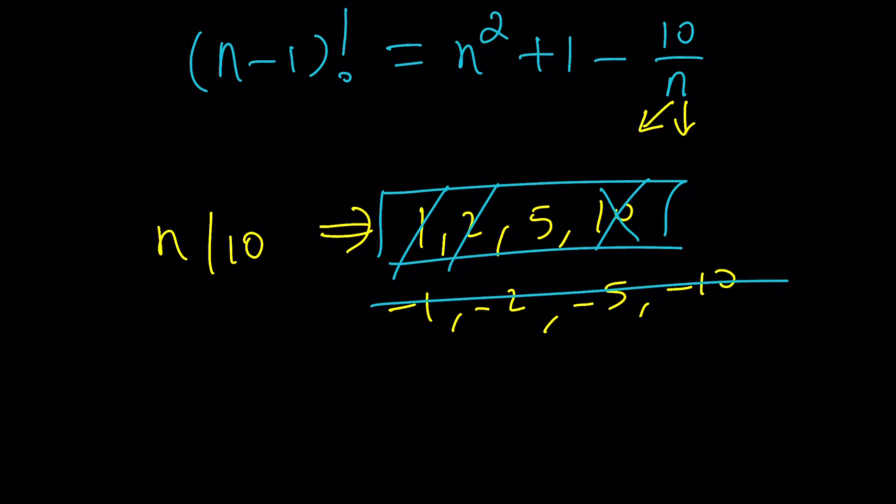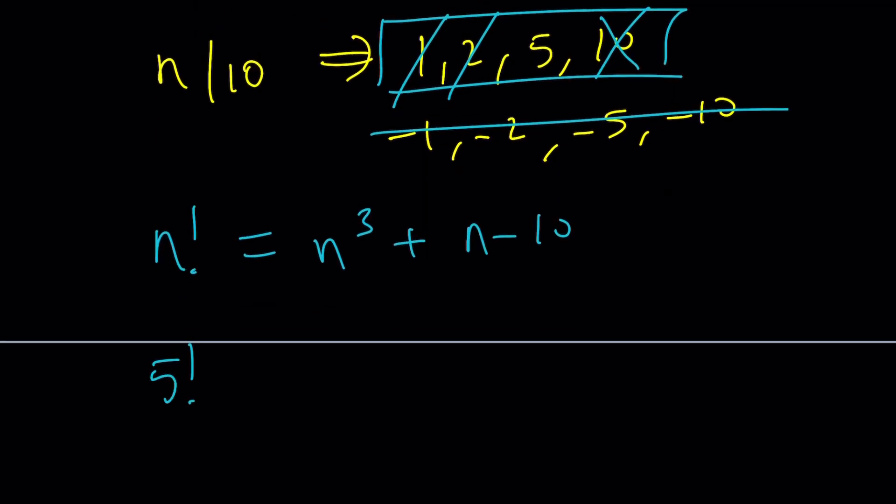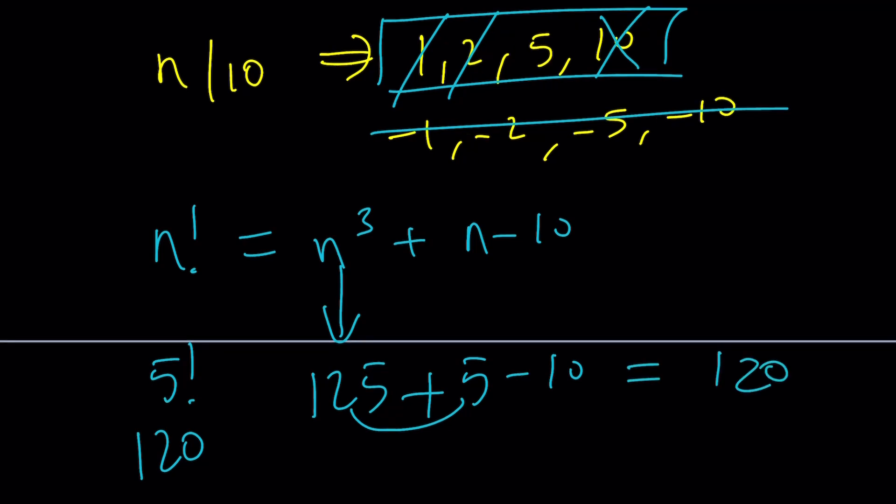Let's check it out. So we have n factorial equals n cubed plus n minus 10. And if n is equal to 5, you get 5 factorial, which is 120. And hopefully you memorized it. This is 125. n is 5, remember? This is 130 minus 10 is 120. Yay, great. We have a success. It worked. And n equals 5 is a solution. And guess what? That is the only solution.